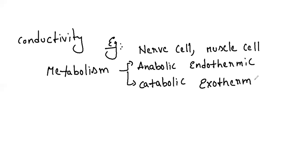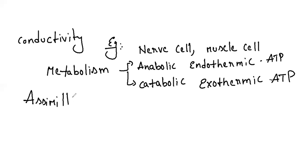In catabolic reactions, heat and energy are released; in anabolic reactions, ATP is stored. Protoplasm also has the capacity to take external materials and resynthesize them into new forms, which we call assimilation. We convert carbohydrates to glucose, fats to glycerol and fatty acids, and proteins to amino acids — this is assimilation. Respiration and excretion also happen in protoplasm.